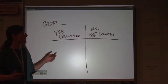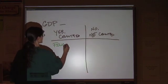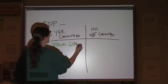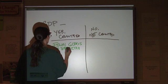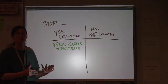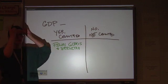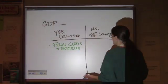So what is counted in that? The first thing is final goods and services. That means goods and services that are purchased by their ultimate user. They are not being used in further production. So, on the flip side of that, what is not being counted?